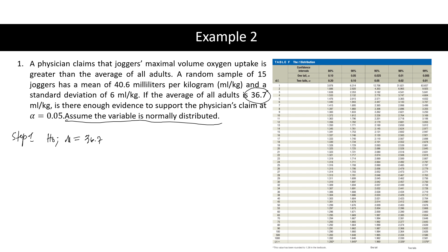Step 1: State the hypothesis and identify the claim. The null hypothesis is H₀: μ = 36.7. The alternative hypothesis is H₁: μ > 36.7, which is our claim — that the joggers' oxygen uptake is greater than the average of all adults.